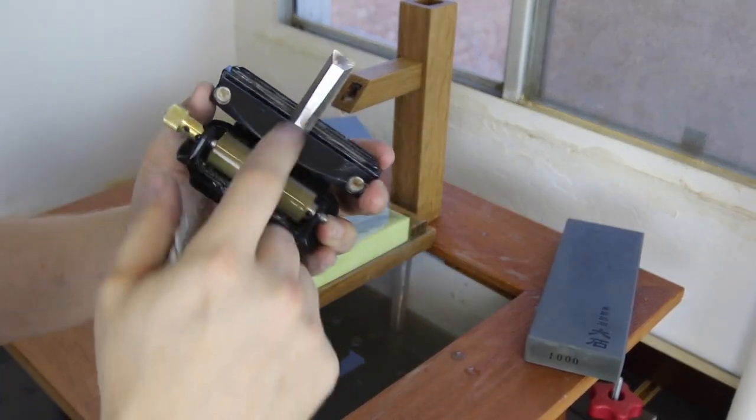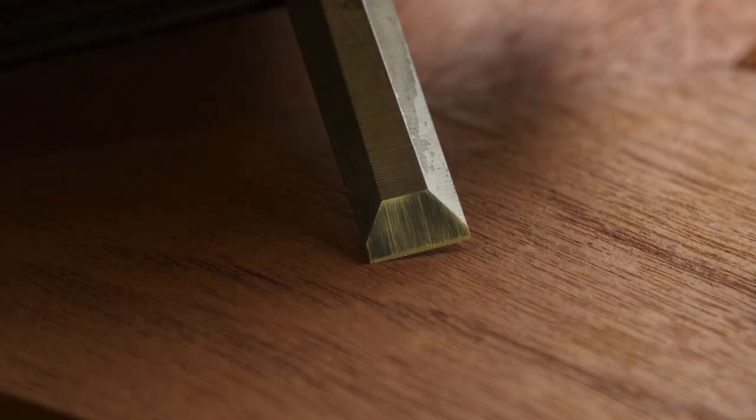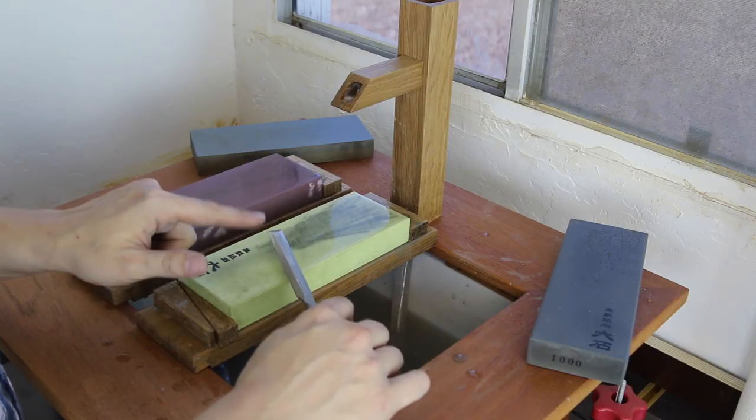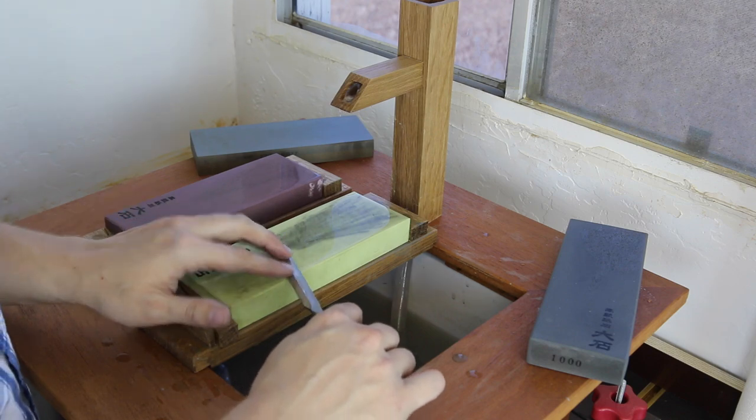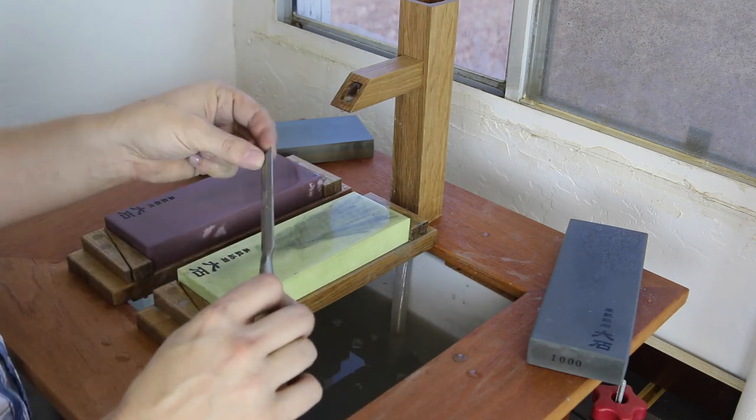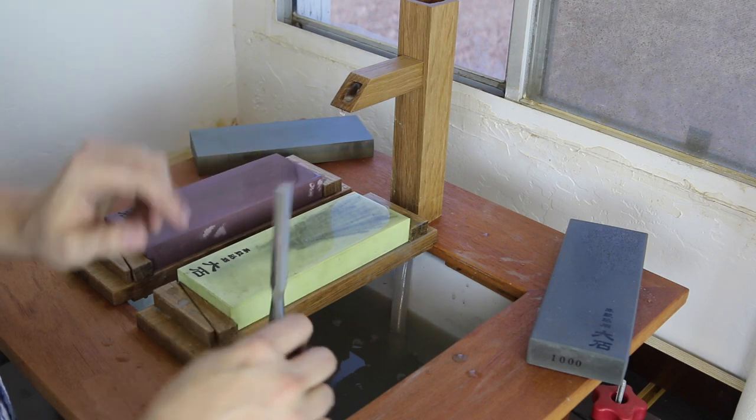And that's it. I did eight quick strokes and that secondary bevel is on there right now. And then just lap the back of the blade on the 8,000 grit stone to remove the burr that was created by doing all the work on the bevel.